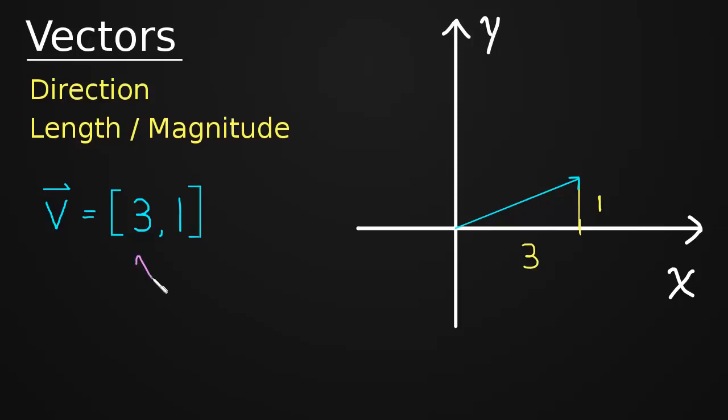So again, this is the X component and the Y component. And now anyone in the world looking at this vector, V = [3, 1], can go ahead and draw that vector if they want to. They know exactly which vector we're talking about when we write that.